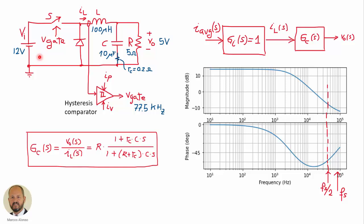Here is the example: a buck converter with 12 volts input and 5 volts output. The response of the output voltage versus the average inductor current, and the equivalent model from the injected average current to the output voltage, is equal to the transfer function G sub C. For this particular case, we have a specific expression whose magnitude and phase can be plotted. Again, this is only valid until the Nyquist frequency, which is the steady-state switching frequency divided by 2 — in our case approximately 39 kHz.